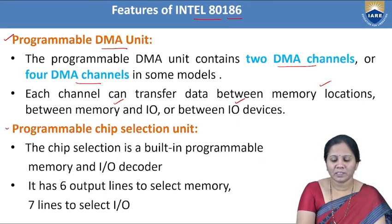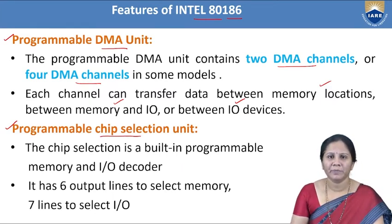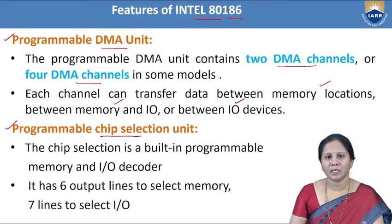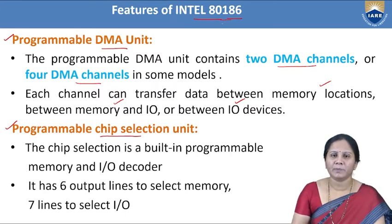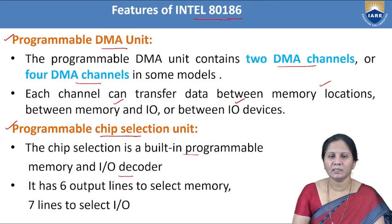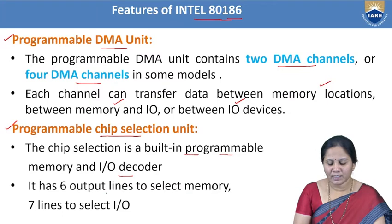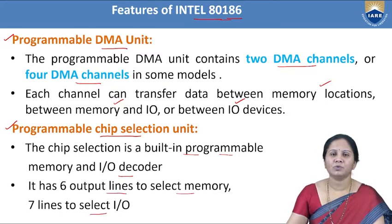The 80186 also has a programmable chip selection unit. In any peripheral device, the chip selection signal is driven by an address decoder circuit, but in the 80186 this is a built-in programmable memory and I/O decoder — no external decoder is needed. It has six output lines to select memory and seven lines to select I/O.